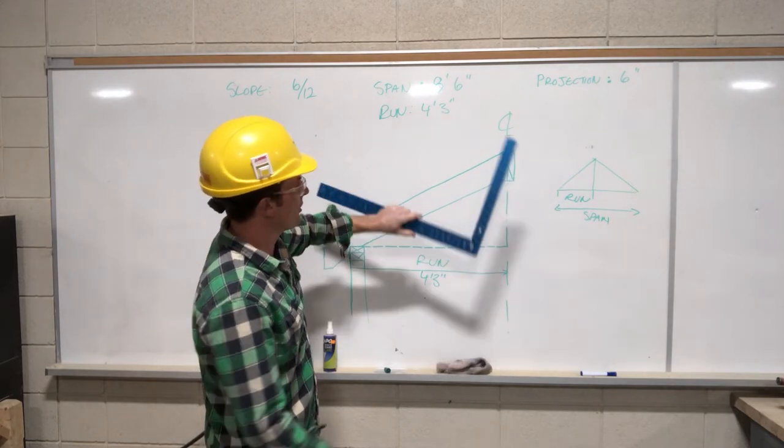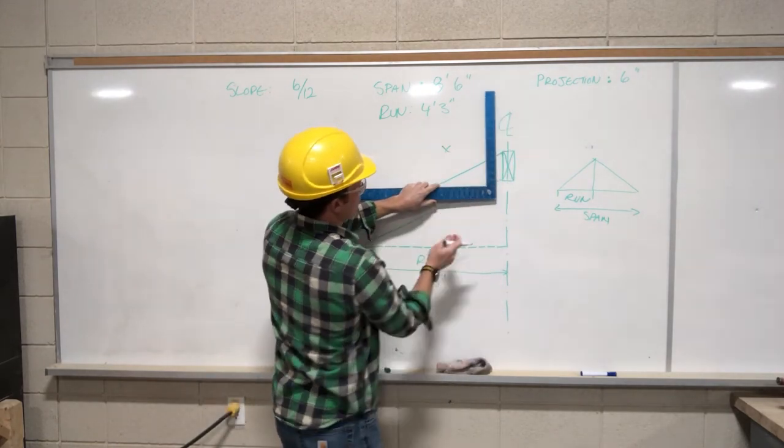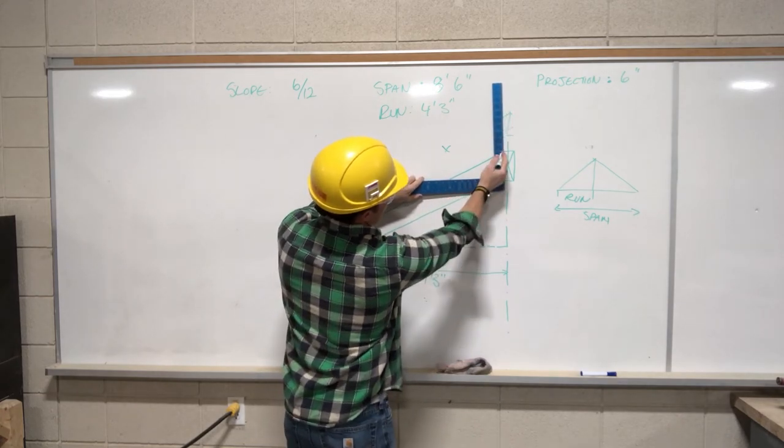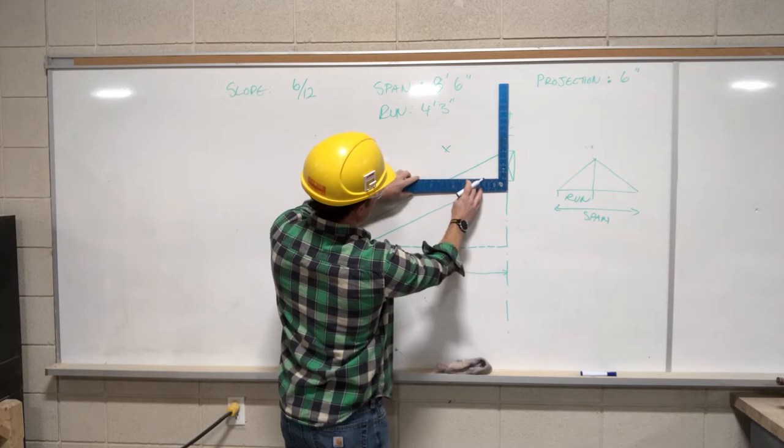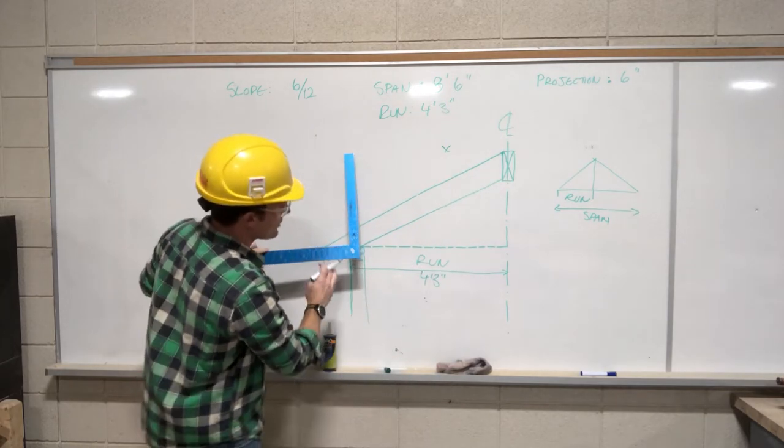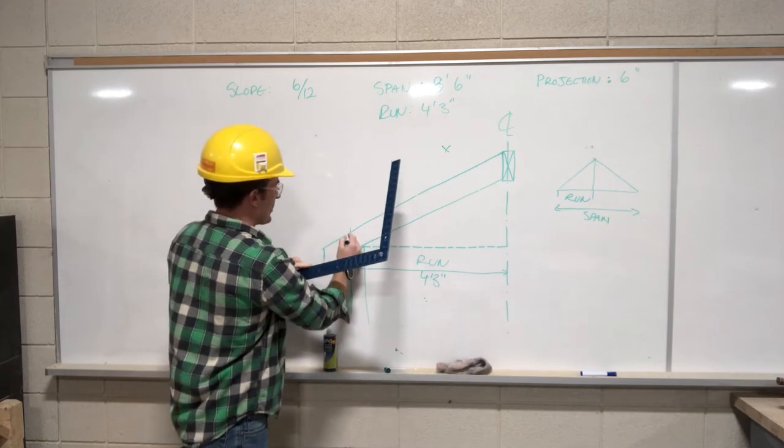But I want to show you what we'll be doing. You will be standing on this side when you lay it out, and you'll be stepping off like this. So my 6 here is my rise. My 12 is my run. And I'm going to step it up 1, 2, 3, 4 times to get to the building line right there.